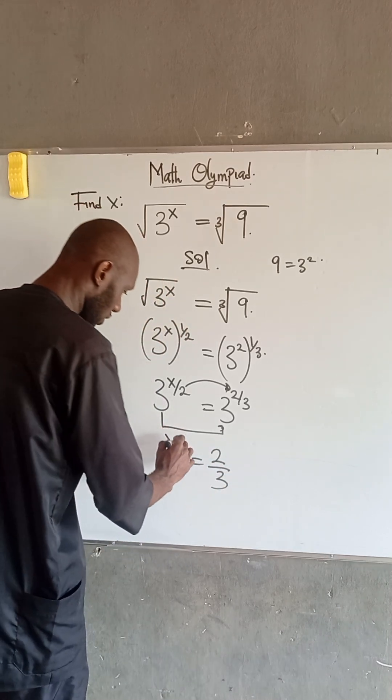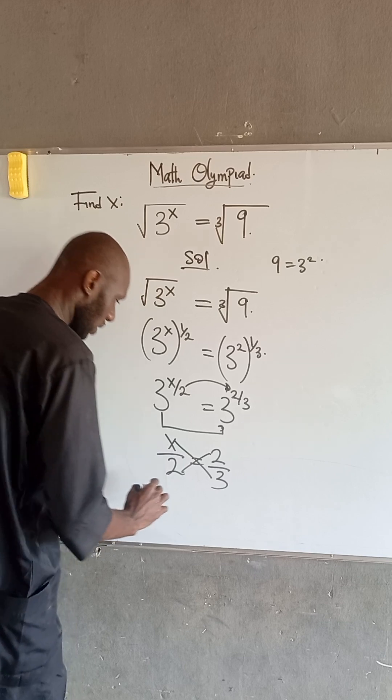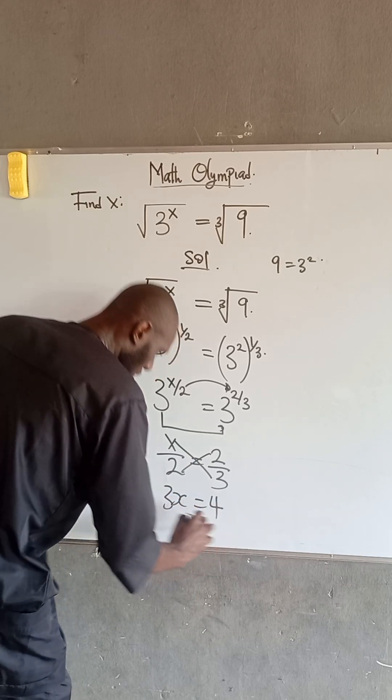At this point, we can cross-multiply. So we have 3x is equal to 4.